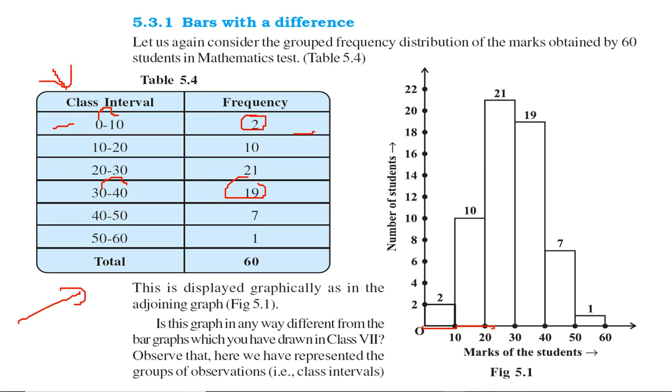From 0 to 10, 10 to 20, these are the class intervals. On the x-axis we have taken marks of the students, on the y-axis we have taken number of students. We can easily mark: from 0 to 10 we have 2, so mark 2. 10 to 20 we have 10, so mark 10 and make a bar. See how simple it is to understand this data using a graph.